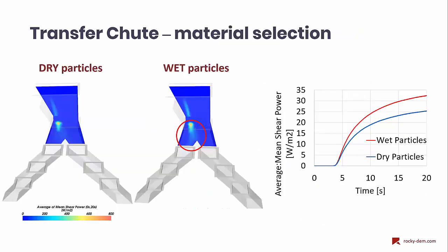Performing the same liner-life analysis, we can see wet material has induced higher mean shear power, which is important in design stage. As the closer we are to the real representation through real material behavior, we can have more confidence over the consequences of the design decision.